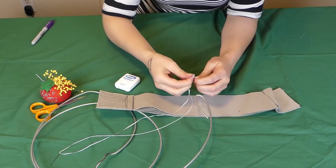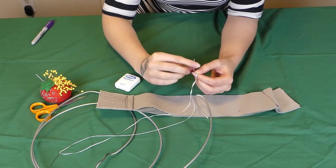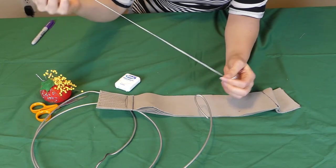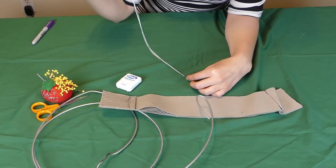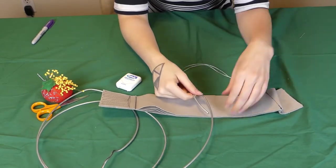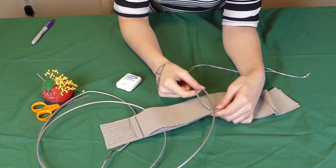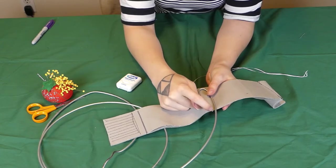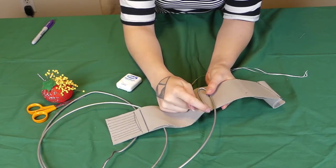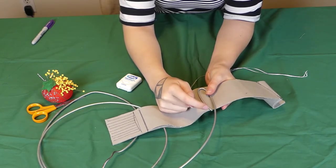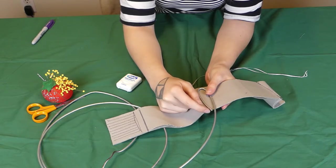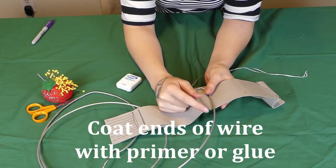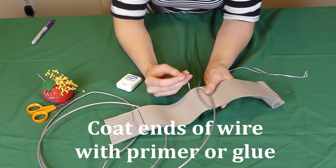Go ahead and double it up and lay it right at the place where your center back will be. You're going to want to coat the edge of that wire with some hot glue or some primer, just something to smooth it so it's not going to hurt you or poke through your fabric.